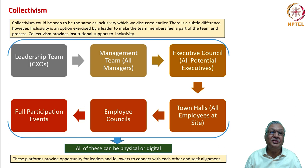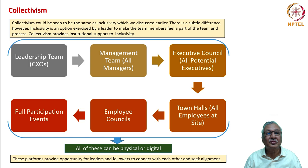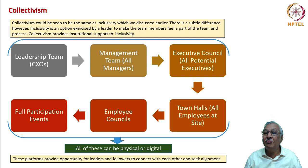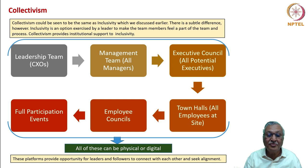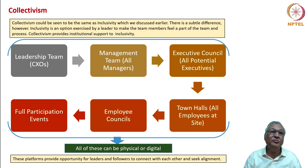Collectivism could be seen as similar to inclusivity discussed earlier, but there is a subtle difference. Inclusivity is an option exercised by a leader to make team members feel part of the team and process. Collectivism provides institutional support to inclusivity. The leadership structure spans from CXOs and the management team, to the executive council, to town halls and employee councils with full participation events — all of which can be physical or digital. These platforms provide opportunity for leaders and followers to connect and seek alignment. Leadership teams and management teams tend to work like collegium structures, while employee councils and town halls are forums of collectivism.